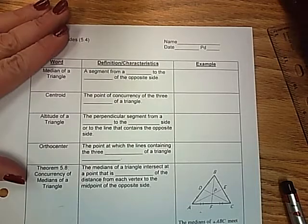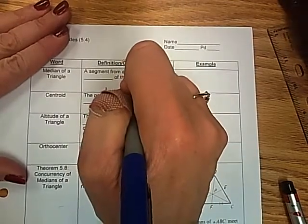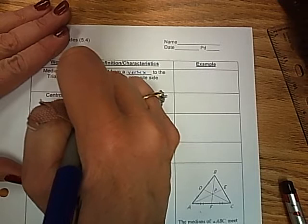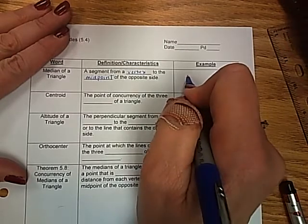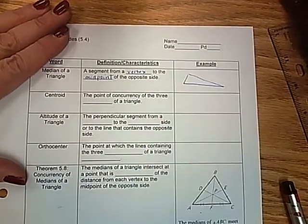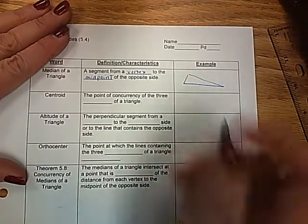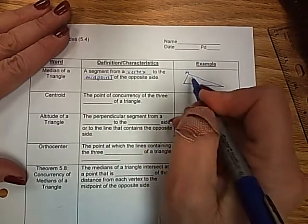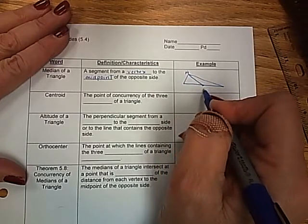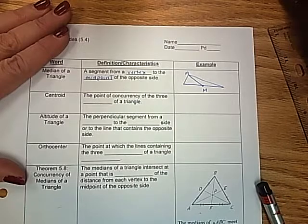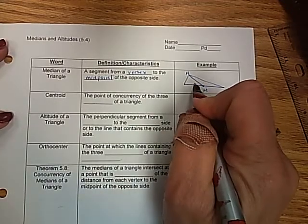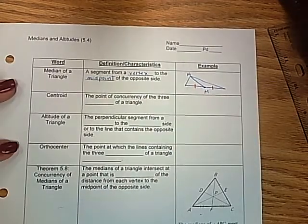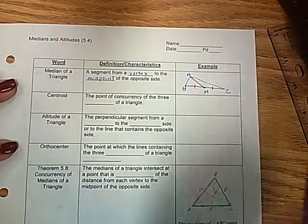The median of a triangle is the segment from a vertex to the midpoint of the opposite side. So if I have a triangle, I'm going to take from vertex A and drop a segment to the midpoint of the opposite side. Because a midpoint makes the two pieces congruent, BM is congruent to MC.